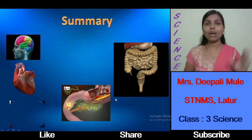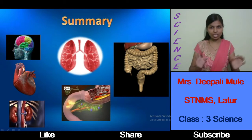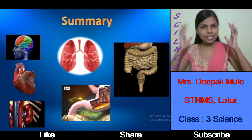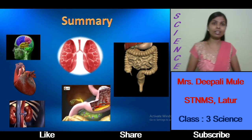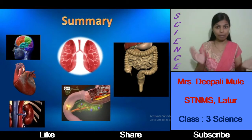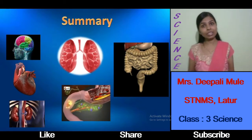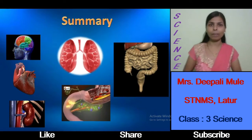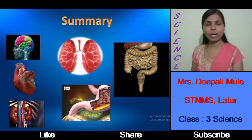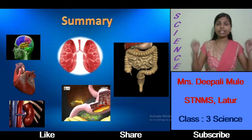In this video we have learned the different organs present inside our body. Let me revise all these points briefly. The brain controls all activities of our body and is present inside our head. The heart is present in the chest, protected by the ribcage, and pumps blood to all parts of our body. The pair of kidneys filters the blood and waste materials are expelled through the ureter.